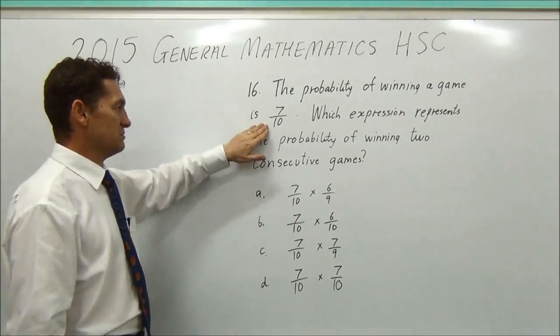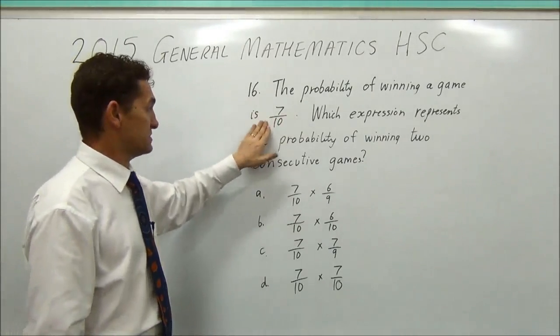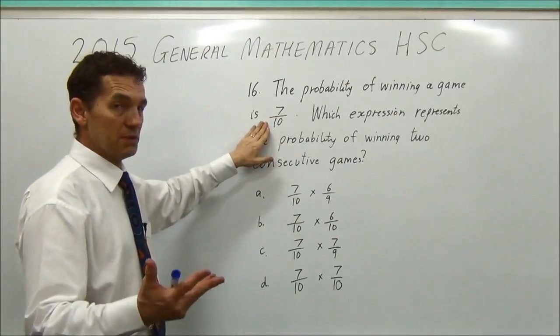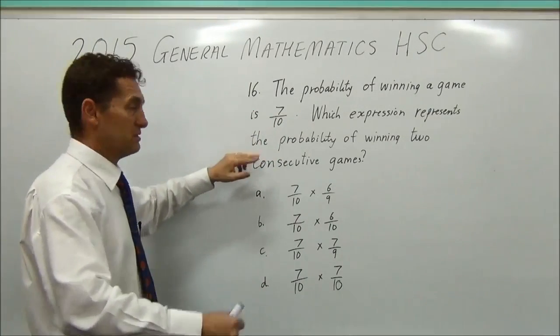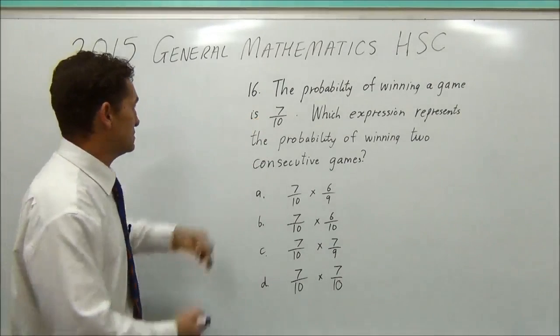So we want to win this game and then we want to win another of the same game. So the probability doesn't change in the game. It's sort of like rolling a dice. It's always 1 on 6. So this game doesn't change.